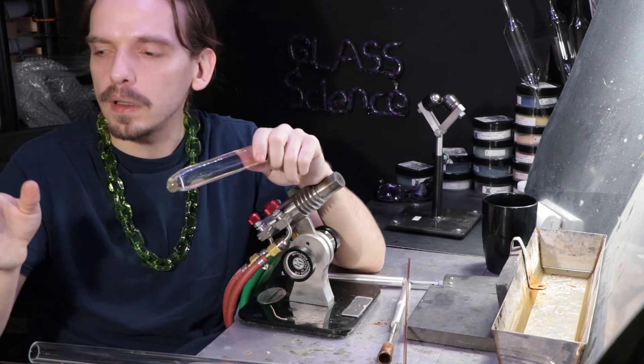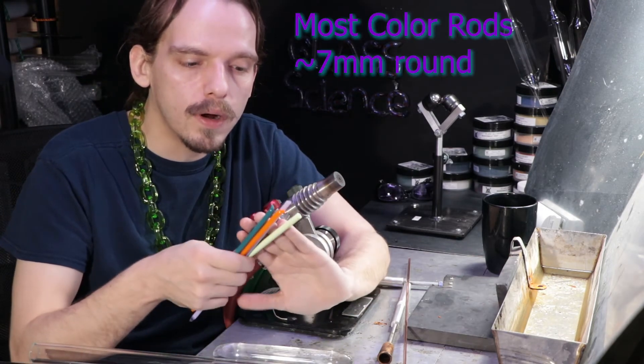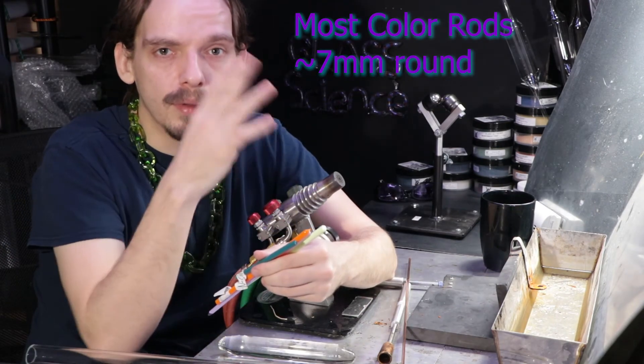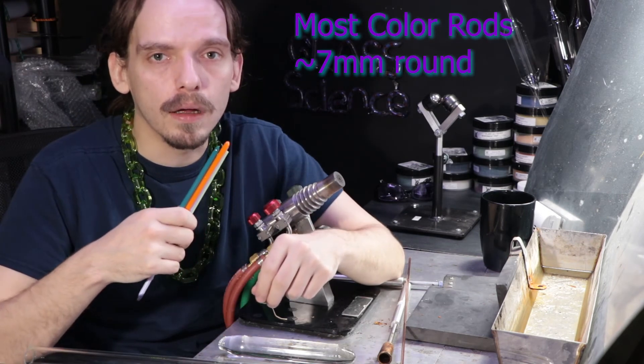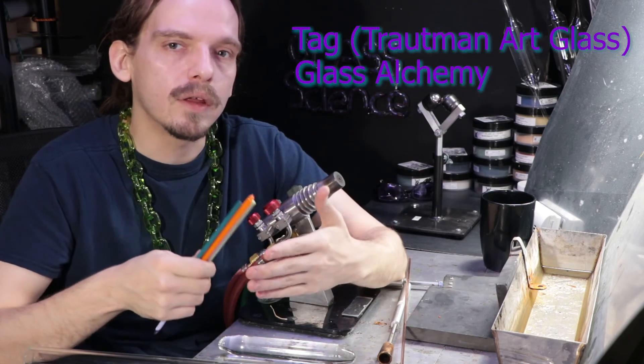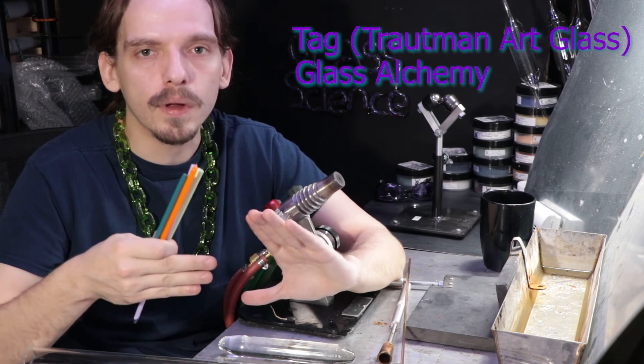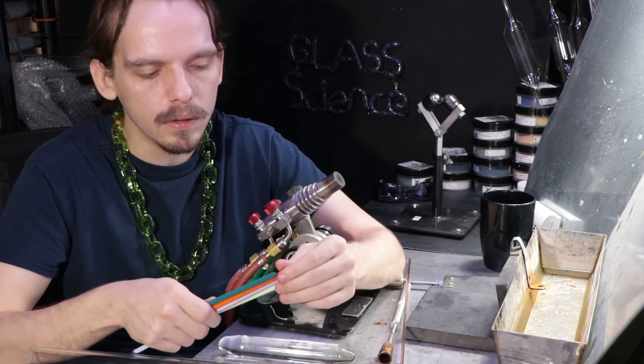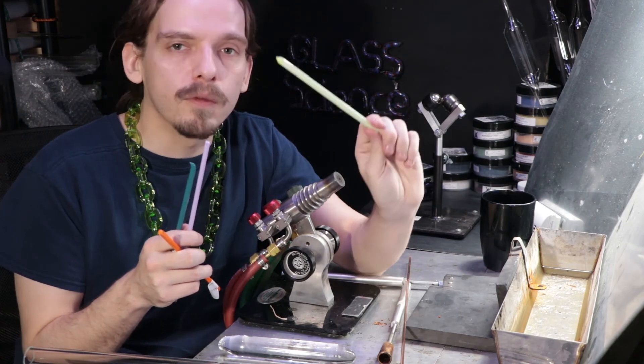And then of course the colored rods, which are actually probably the most fun part. You have a lot of different companies and different colors between them to choose from. A couple of my favorites are TAG and Glass Alchemy. I think TAG does really great transparents and the color changing colors like the silvered ones, while Glass Alchemy does really great opaque colors like the solid. This is solid orange from Glass Alchemy and this is a green slime from TAG. It's kind of like ectoplasm.